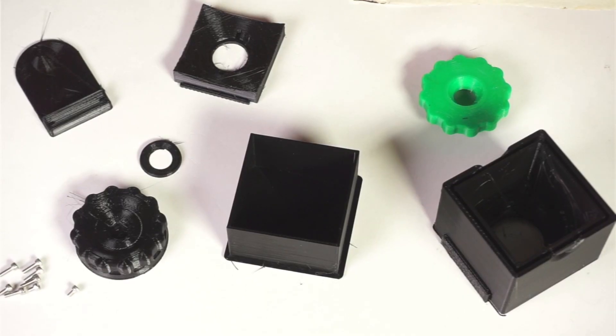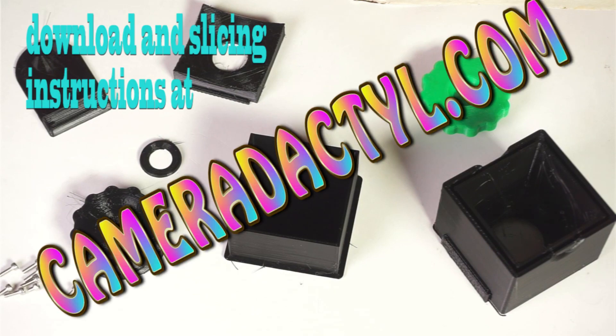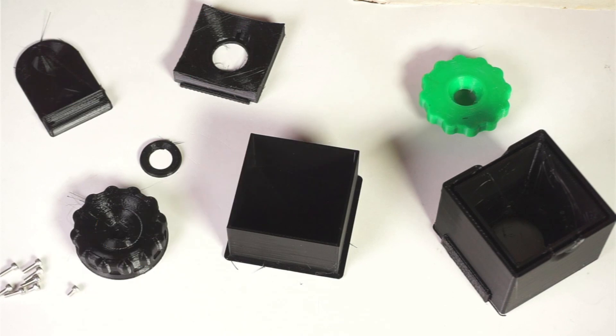These are the parts as they come off the printer. Check Cameradactyl.com for slicing instructions with the download file. Once you have them all printed out, you need to trim the parts.